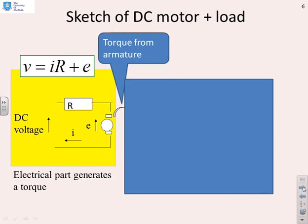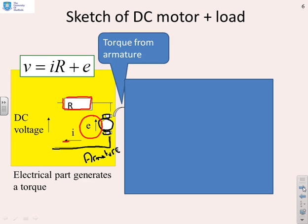What does the DC motor look like? First, let's look at the electrical part. We've got a very simple electrical circuit — a wire. This funny-looking thing here is meant to represent the armature. You'll notice there's a back EMF across the armature, which is generated when the armature spins in a magnetic field. There's a resistor R, a current flow I, and a supplied voltage V. The voltage supplied equals IR plus the back EMF — that's simple Kirchhoff's law.